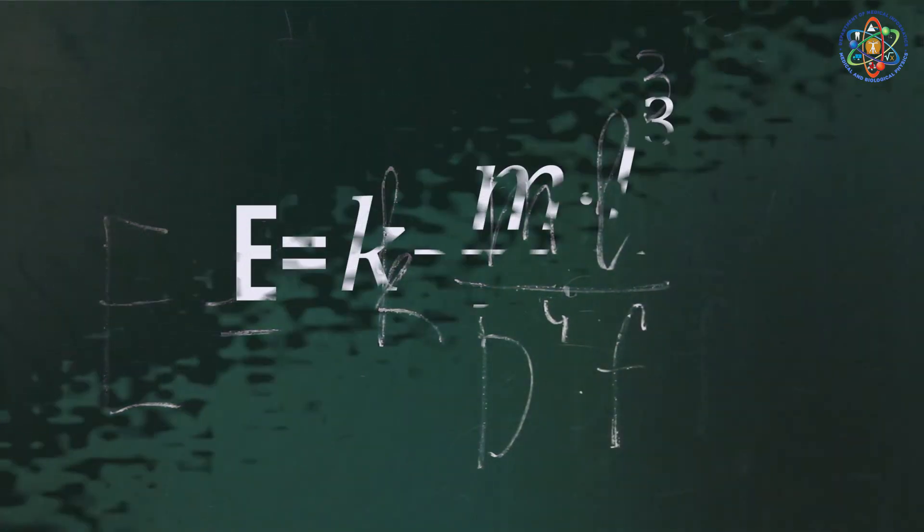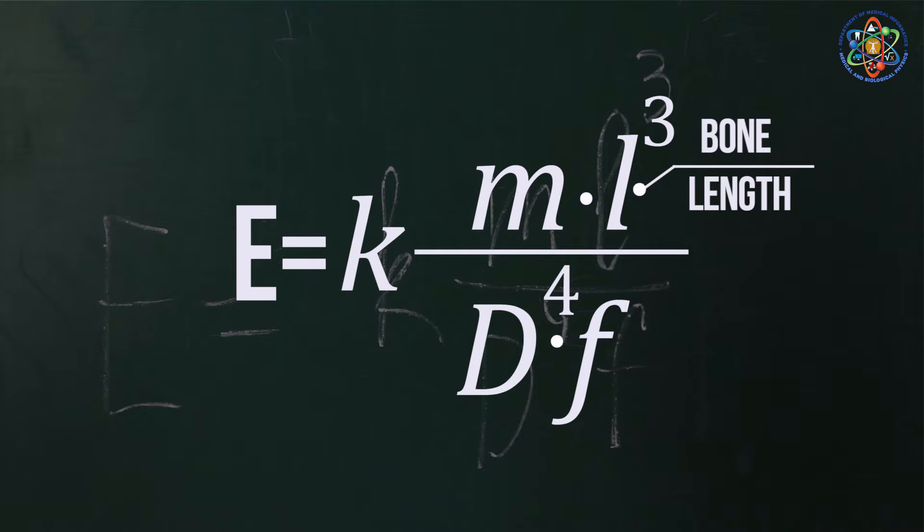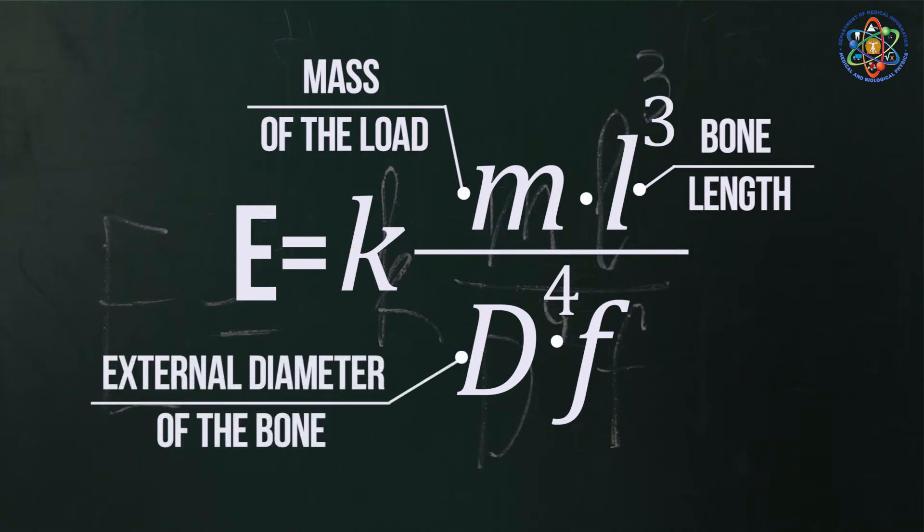Where L is the length of the bone, which is the distance between the supports measured with the help of a ruler. M is the mass of the load. D is the external diameter of the bone, measured with the help of a caliper in three different directions of the section.